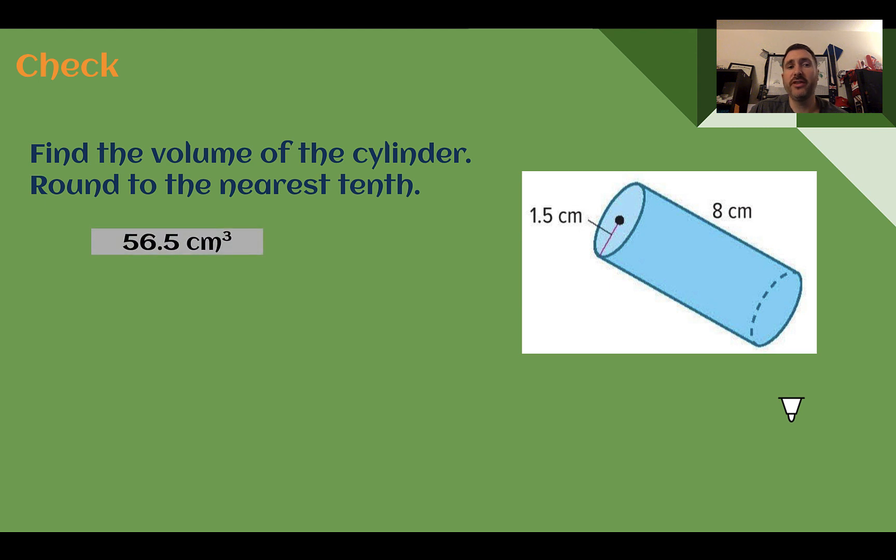Check your answer. You should have found that this is 56.5 centimeters cubed. If I'm taking my volume formula, V = πr²h. R is 1.5. I can see that's my distance from the center to the edge. My radius squared times 8. Using my calculator, 1.5 times 1.5 is 2.25 times 8. 2.25 times 8 is 18. And then still have to do that π out front. 18 times about 3.14 would give us 56.5. And I can just use a calculator for that point.